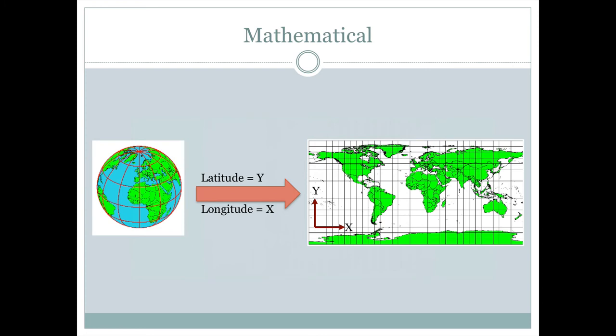The last way that we can start with a globe and get lines onto a map projection and Cartesian coordinate system is by doing some sort of mathematical operation. In this case, we're just saying the latitude equals y and the longitude equals x. And in this way, we're doing a very simple map projection, which has plenty of distortion, but it's called a plate-carré map projection, and it's a very simple map projection to achieve because the mathematical operation is so simple. Latitude equals y and longitude equals x.